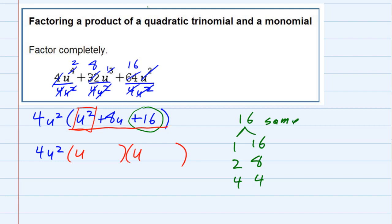the signs have to be the same, and they have to add up to this middle term, which is a positive 8u. So since the signs are the same and they're adding up to a positive, I know that the signs have to be positive.